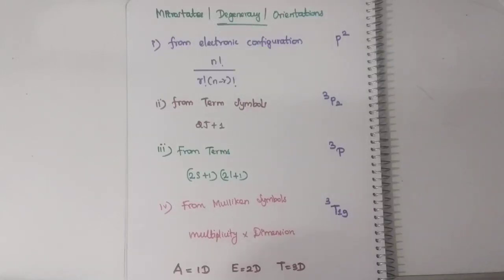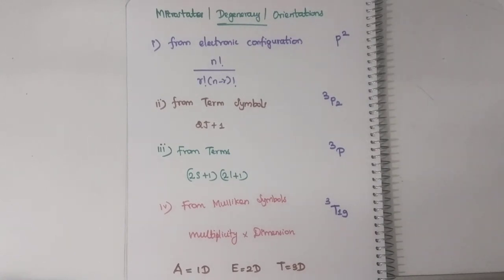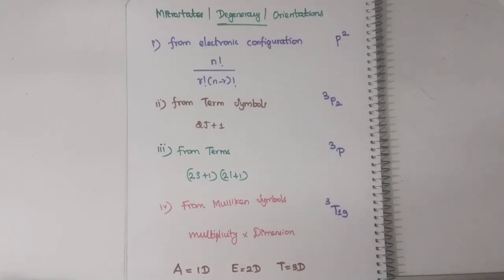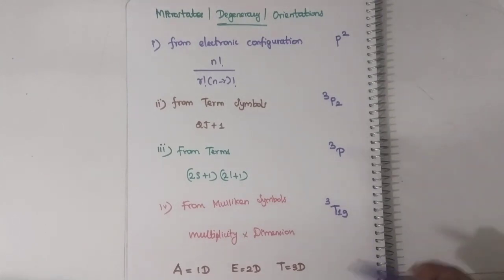Today we are going to solve some questions from microstates. I have already uploaded one video about microstates - microstates from electronic configuration - how to calculate the number of arrangements or microstates if they have given electronic configuration. So if you haven't watched that video, then kindly watch that video first. Then only you can understand this concept.